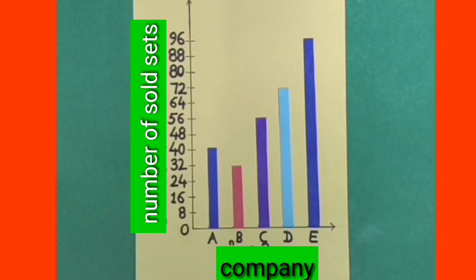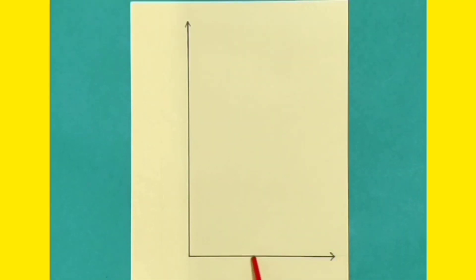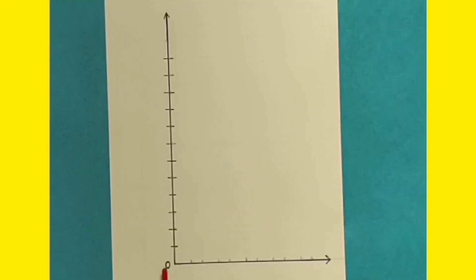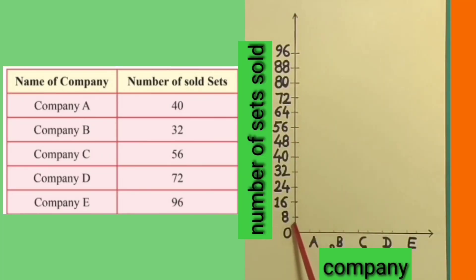Dear students, let's observe the data given in this table carefully and draw a bar graph representing this data. To draw a bar graph, we draw two lines — one vertically and one horizontally on a paper. These two lines meet at a point called 0. On the vertical line, we mark different points at equal distance from each other. On the horizontal line, we mark points to draw rectangular bars of equal breadth. These rectangular bars should be at equal distance from each other.